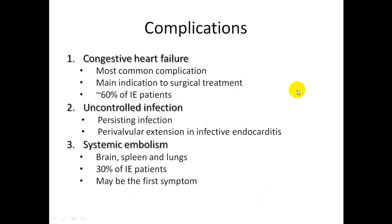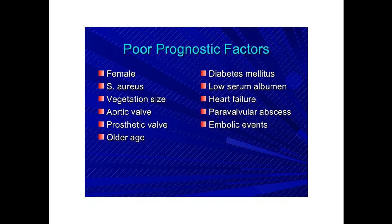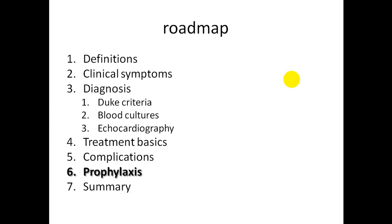Complications: congestive heart failure is the most common complication and the main indication for surgery, occurring in about 60% of infective endocarditis cases. Other complications include uncontrolled or persistent infection, perivalvular extension, systemic embolization to brain, spleen, and lungs (30% of cases, sometimes the first symptom), neurological events, acute renal failure, rheumatic problems, and myocarditis. Poor prognosis factors include: female sex, Staph aureus, large vegetation, aortic valve involvement, prosthetic valve, older age, diabetes mellitus, low serum albumin, heart failure, paravalvular abscess, and embolic events.